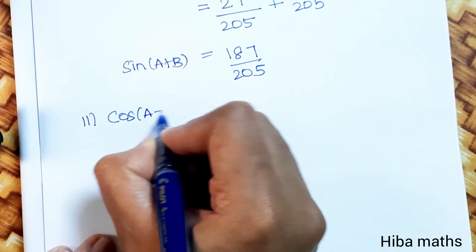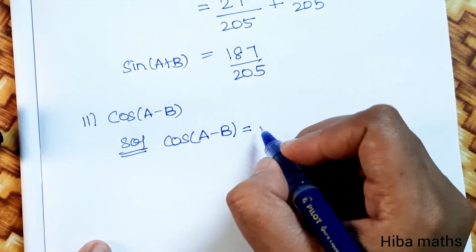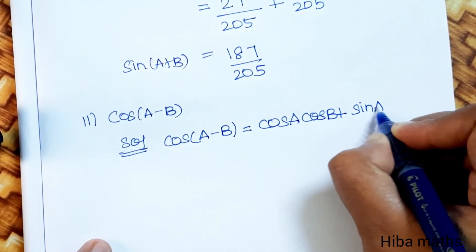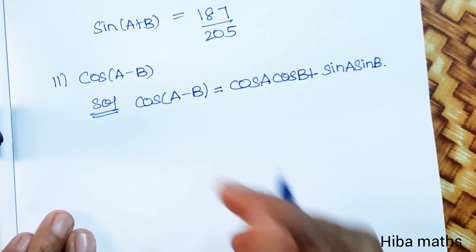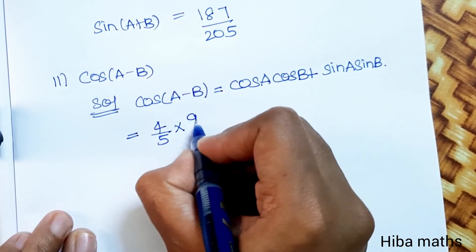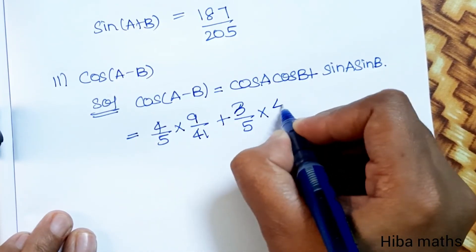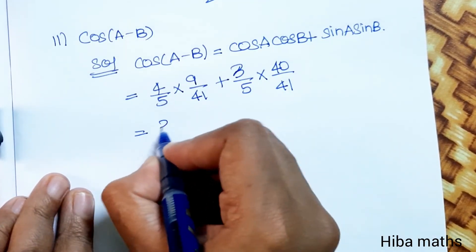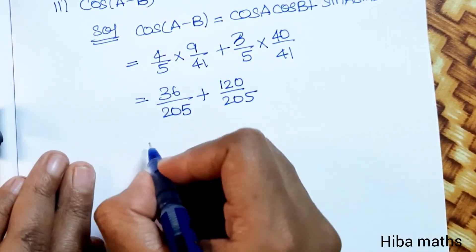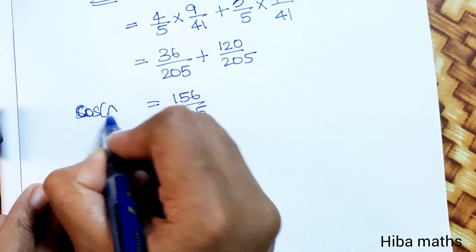Second part: cos(A minus B). Using the formula cos(A minus B) equals cos A cos B plus sin A sin B. Substituting values: cos A is 4 by 5, cos B is 9 by 41, sin A is 3 by 5, sin B is 40 by 41. So we get 36 by 205 plus 120 by 205, which equals 156 by 205. This is the value of cos(A minus B).